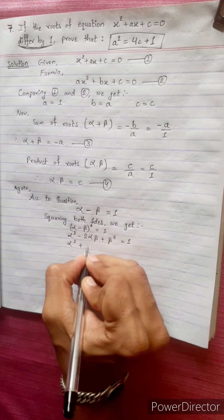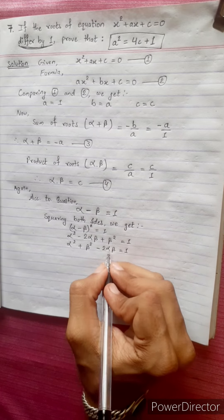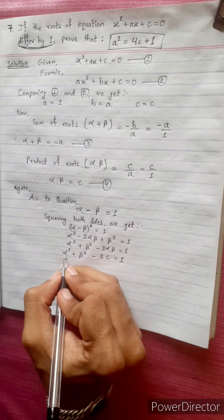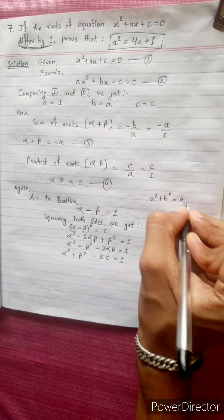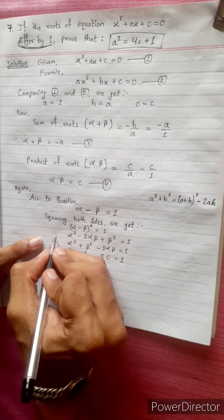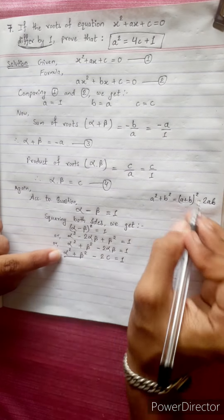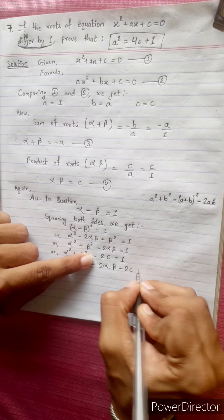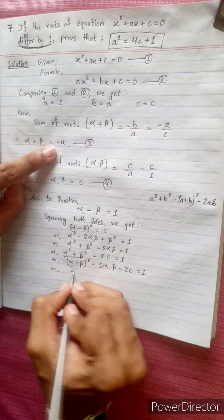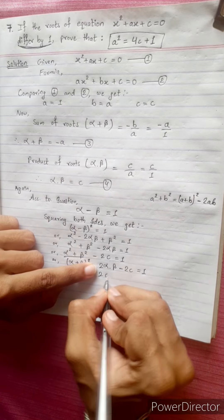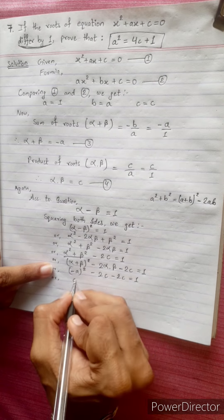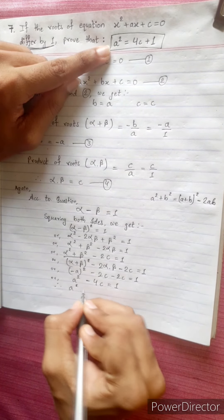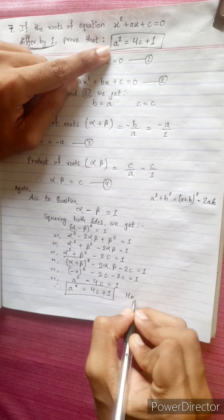Expanding: alpha² - 2·alpha·beta + beta² = 1, which gives alpha² + beta² - 2·alpha·beta = 1. Substituting alpha·beta = C: (alpha + beta)² - 2·alpha·beta - 2C = 1. Since alpha + beta = -A, we get (-A)² - 2C - 2C = 1, so A² - 4C = 1, therefore A² = 4C + 1. Hence proved.